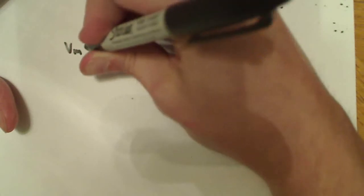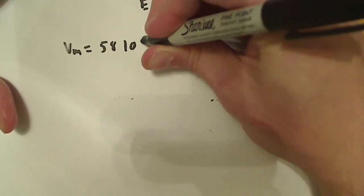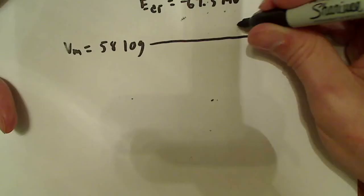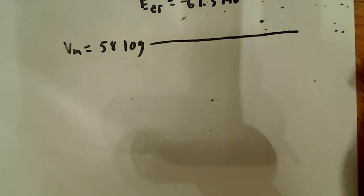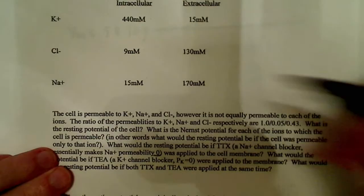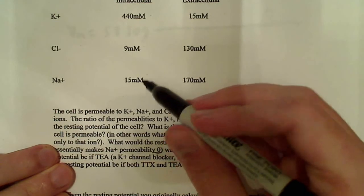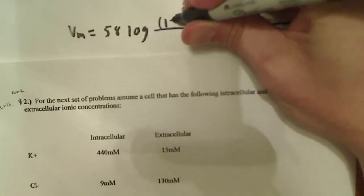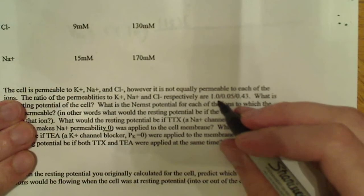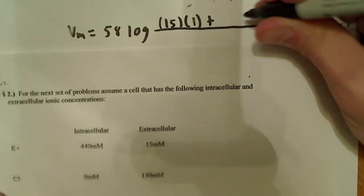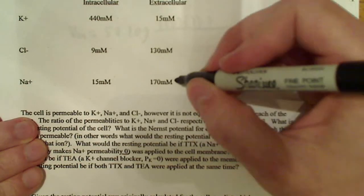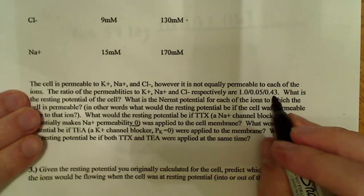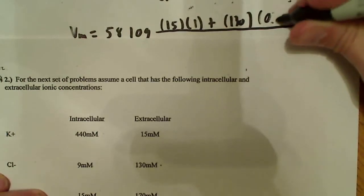For this question we do have to use the Goldman-Hodgkin-Katz equation. That equation says VM is equal to 58 log, and then it has the concentration of Na+ outside, K+ outside, Cl- inside, and so on. Now remember, the permeability for sodium is zero. So let's start with K+: potassium outside the cell is 15 millimolar, and that's multiplied by a permeability constant of 1. Now let's look at chloride — because sodium doesn't matter — so that becomes 130 millimolar, and for chloride the permeability value is 0.43.